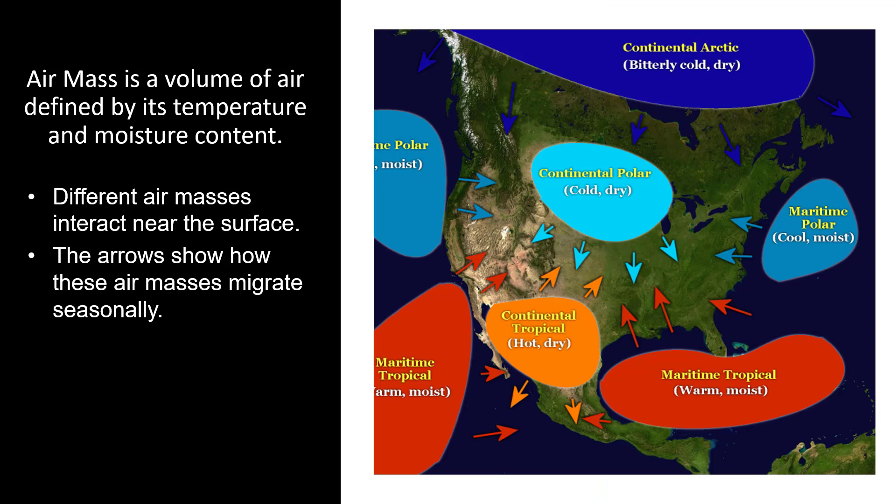An air mass is a volume of air defined by its temperature and moisture content. Different air masses interact near the surface. Continental air masses originate or develop over land, while maritime air masses originate over ocean. Close to the North Pole, a continental Arctic air mass is bitterly cold and dry. Near the U.S.-Canadian border, a continental polar air mass is cold and dry.